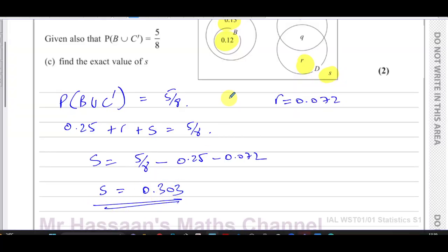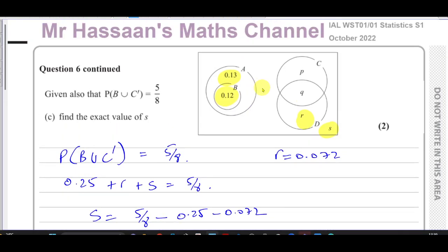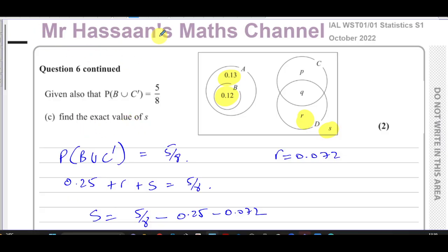That's question number six from the October 2022 exam. Other questions from this S1 paper can be found in the playlist. Other probability and Venn diagram questions from S1 are in the other playlist. Subscribe by clicking the link in the middle — thanks for watching and see you soon.